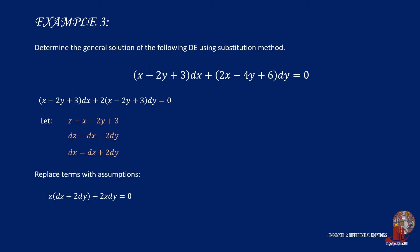Plug these assigned values into the original equation, and we have z times the quantity dz plus 2dy plus 2z dy is equal to 0. Then distribute z into the two terms, which makes the equation z dz plus 2z dy plus 2z dy is equal to 0. This simplifies as z dz plus 4z dy is equal to 0. Simplify further by dividing the equation by z to have dz plus 4dy is equal to 0.